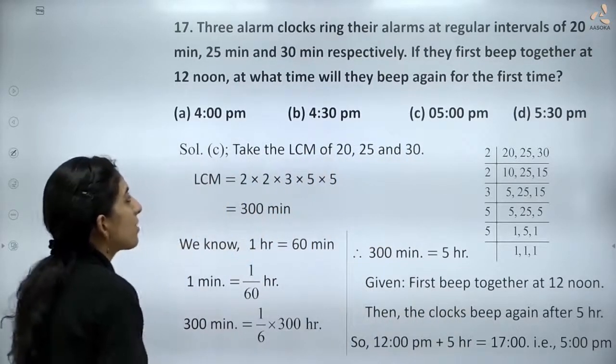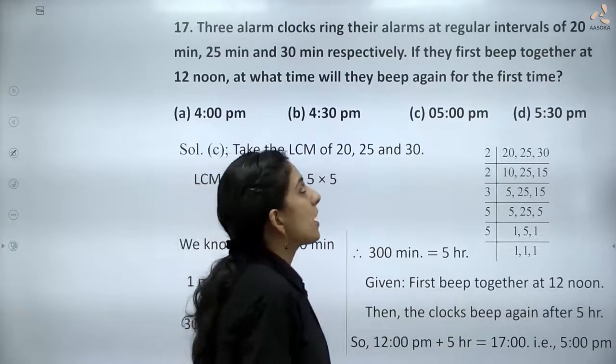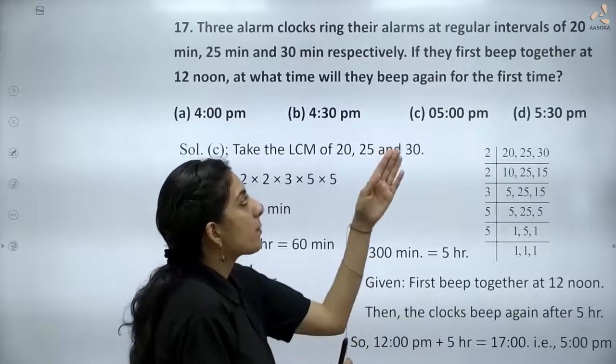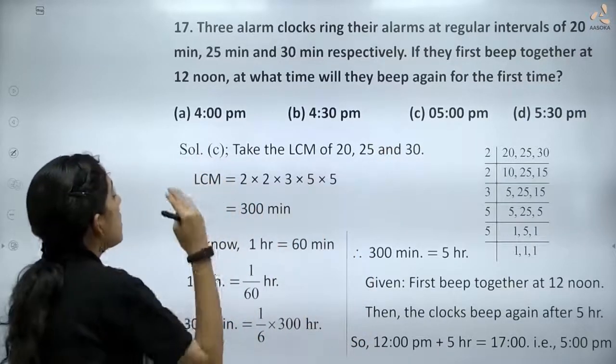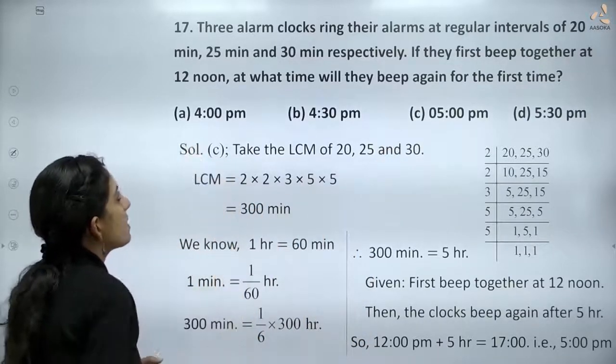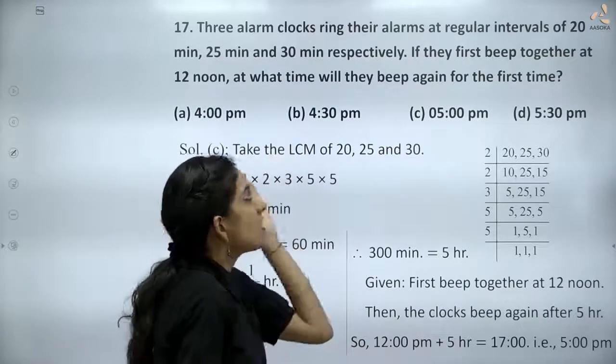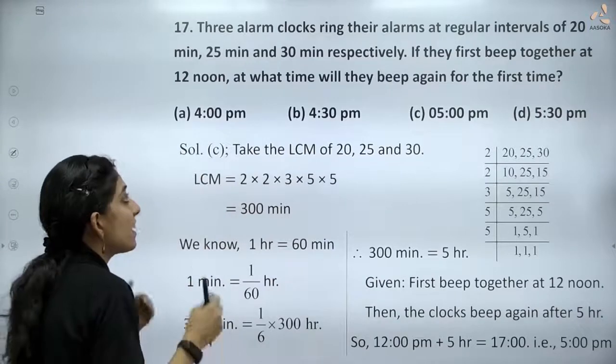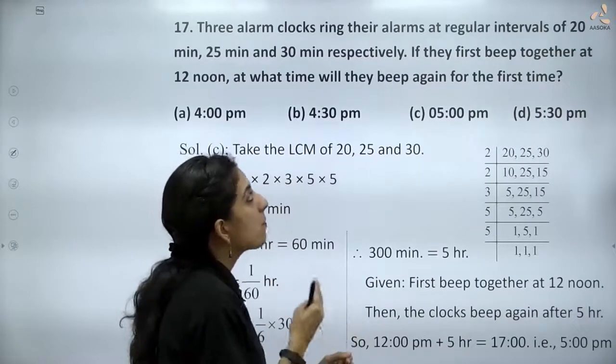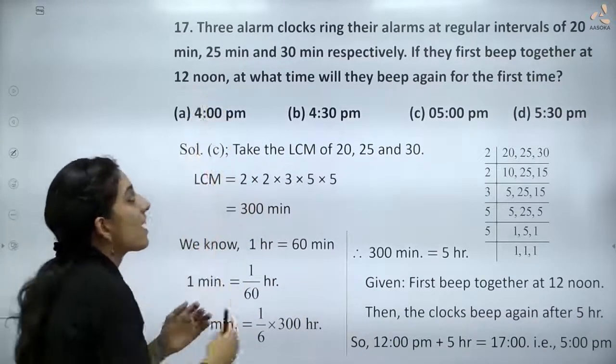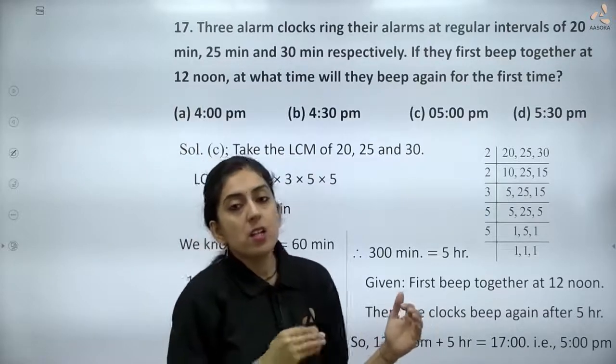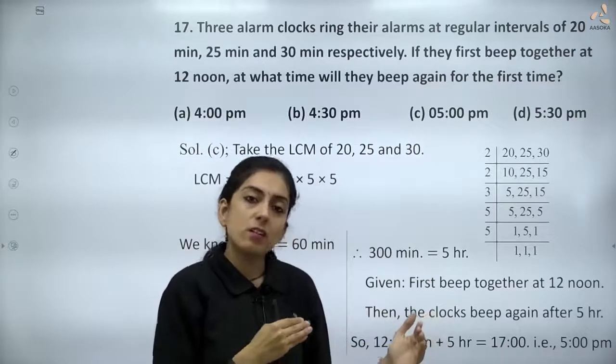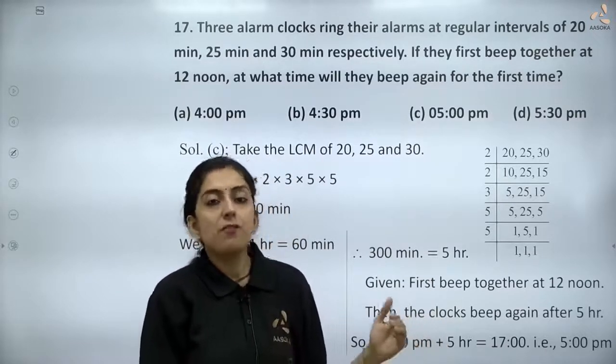What we are given - हमें यहापे three alarm clocks दी गई हैं जो regular intervals पर beep करती हैं. First alarm clock beeps at 20 minutes, second at 25 minutes, and third at 30 minutes. यह भी दिया हुआ है कि यह तीनों एक साथ 12 noon पर beep करती हैं. तो 12 noon के बाद यह कब फिर से एक साथ बीप करेंगी? We have to calculate that.